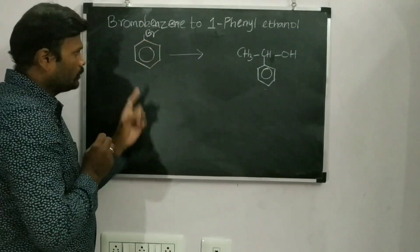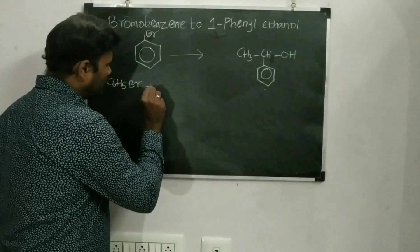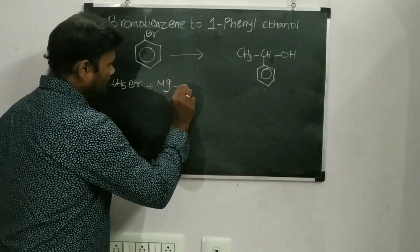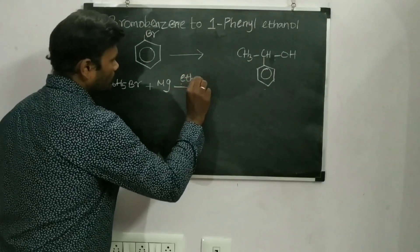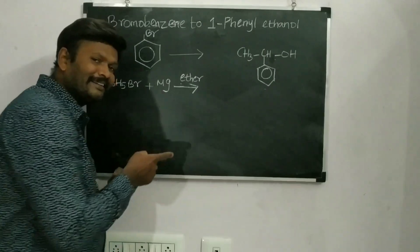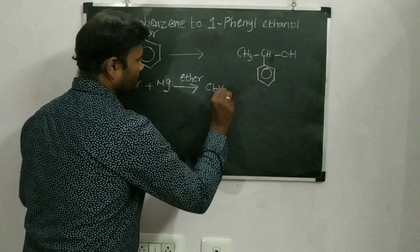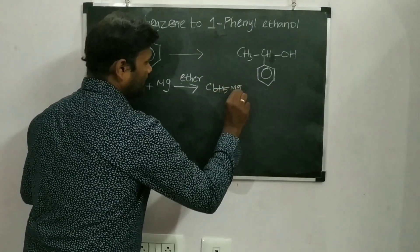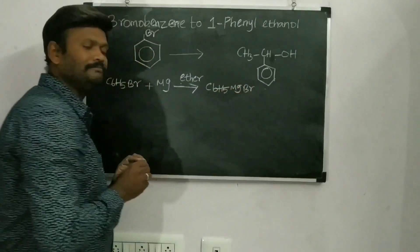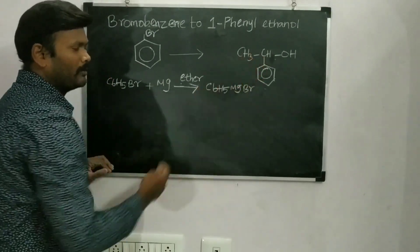Here it is bromobenzene — I will be writing C6H5Br. If it reacts with magnesium metal in the presence of ether, what product will I get? This is the famous Grignard reagent — that is C6H5MgBr. Once I got C6H5MgBr, I can synthesize this compound very easily.